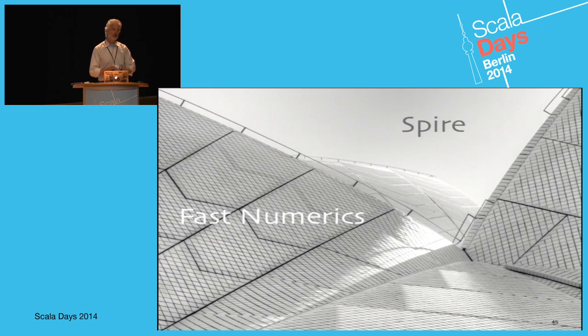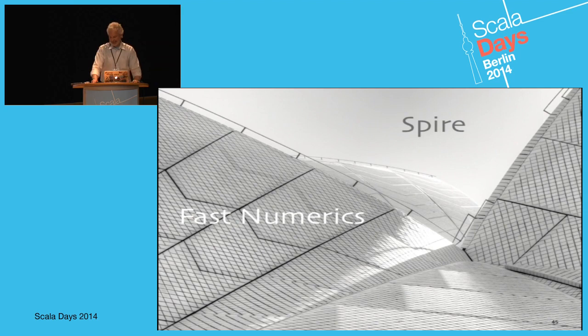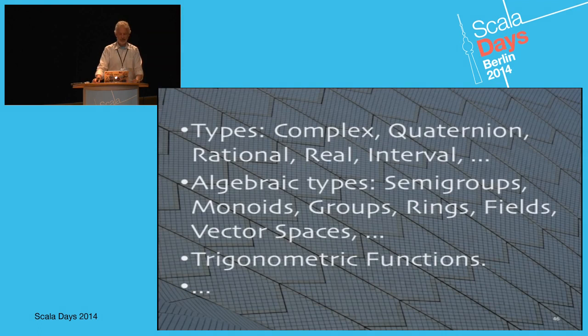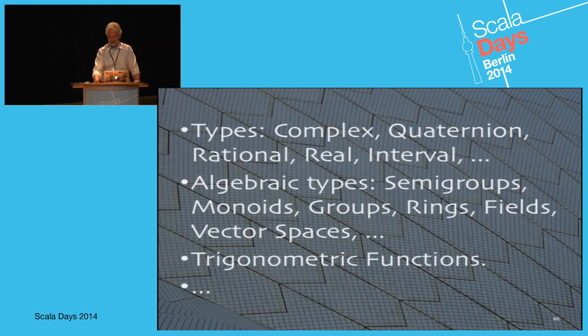Another math library is Spire, aimed at very fast numerics. I actually did physics in school and did a lot of number crunching — I'd start jobs and come back in two weeks to see if they were finished or crashed. Spire has a richer set of mathematical types: complex numbers, quaternions, rationals, real intervals, and algebraic types like semigroups, monoids, and groups. If any of those terms mean something to you, you might find it interesting.